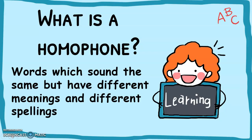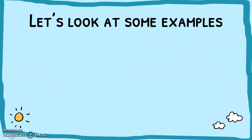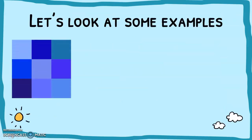What is a homophone? Homophones are words which sound the same, like 'there', but they've got different meanings and different spellings. It's all tricky stuff. Let's have a look at some examples.